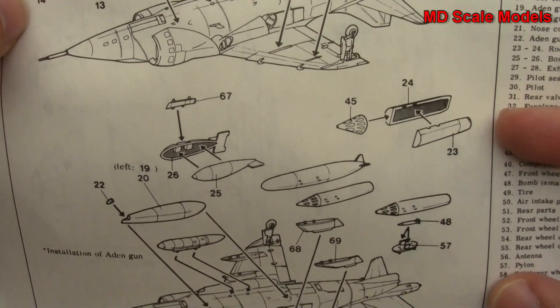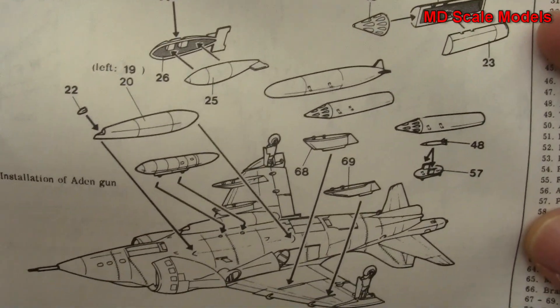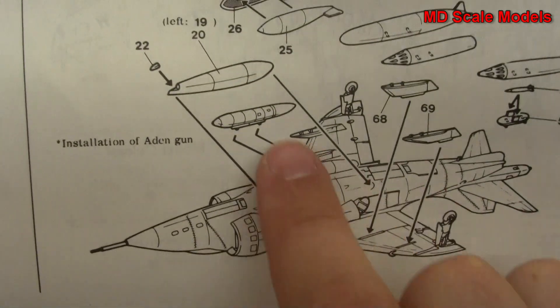And then here's looks like another option there, and this one has the Aiden gun, which is a large pod-mounted gun underneath.